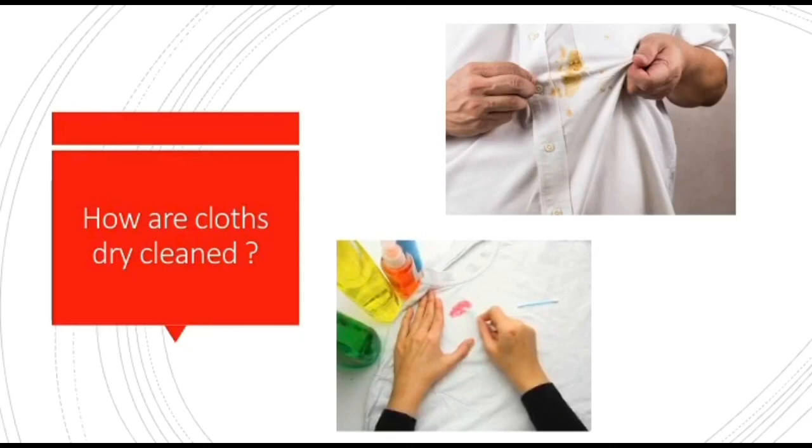Dear students, for the stain to go away, they use solvents like petrol or other chemicals for cleaning the clothes. Only then the stain gets dissolved in it and the clothes get clean. I hope you all have understood this concept.